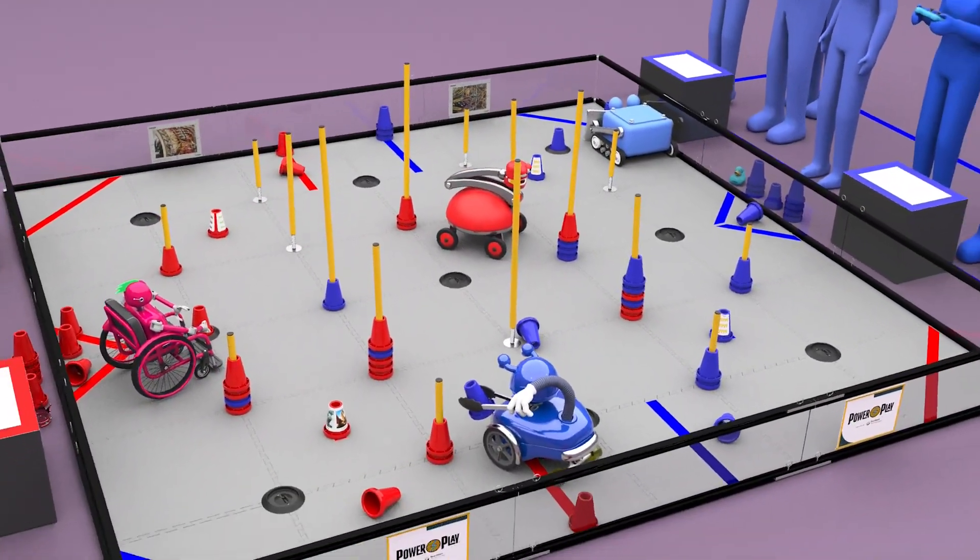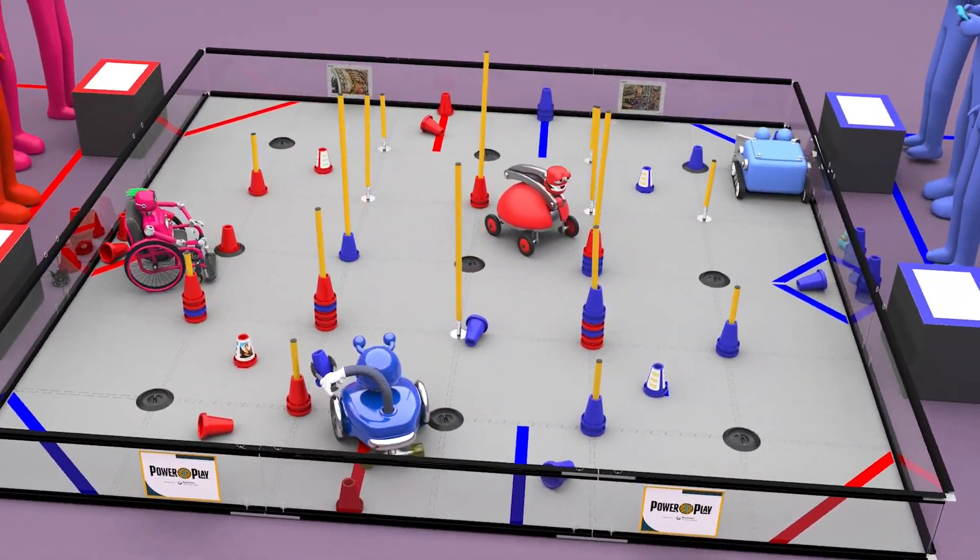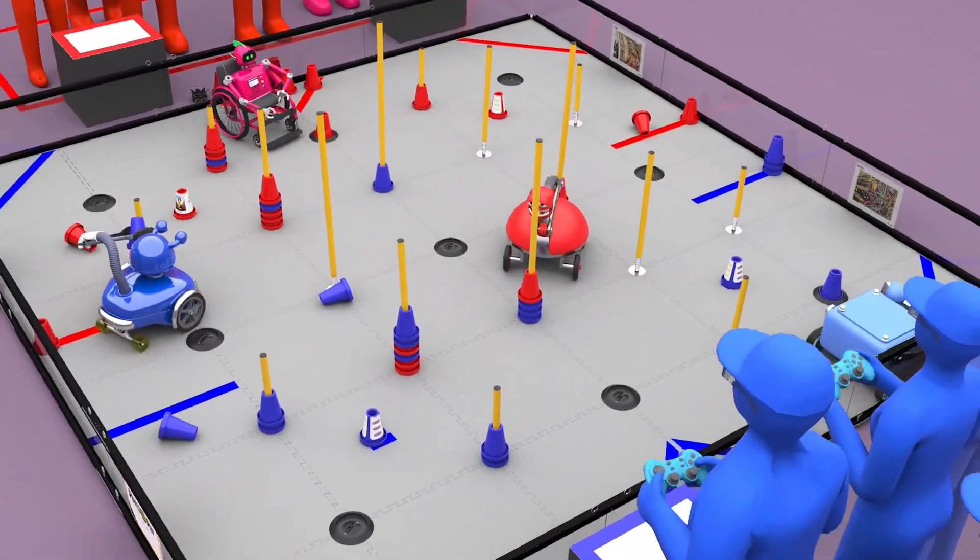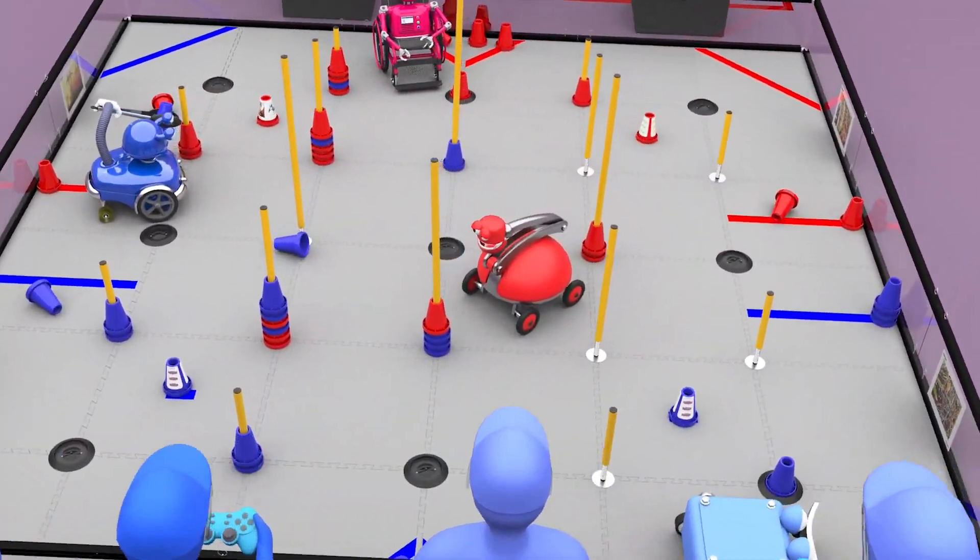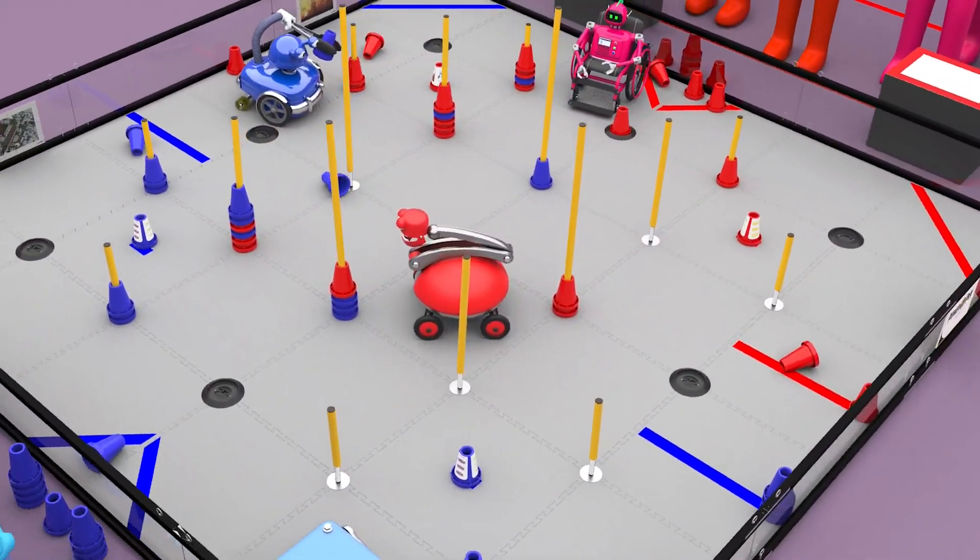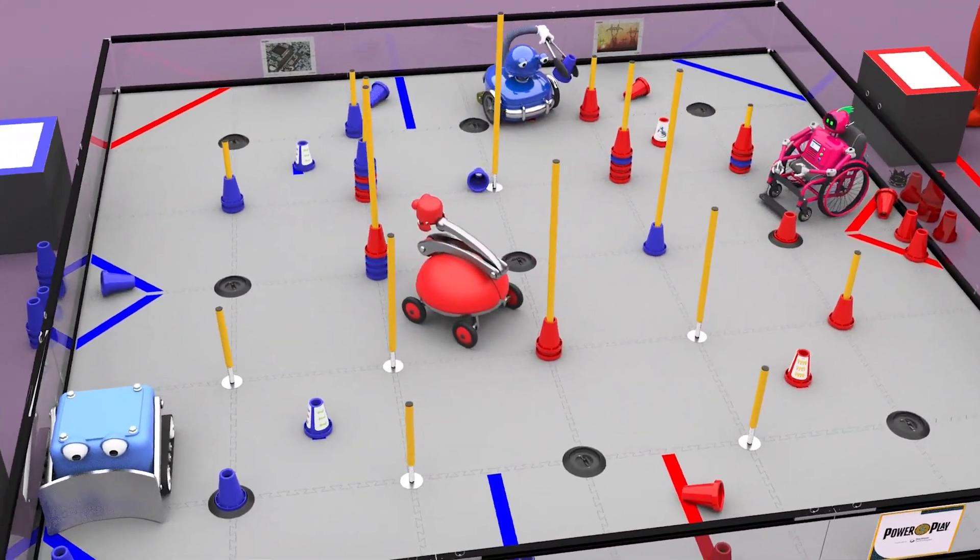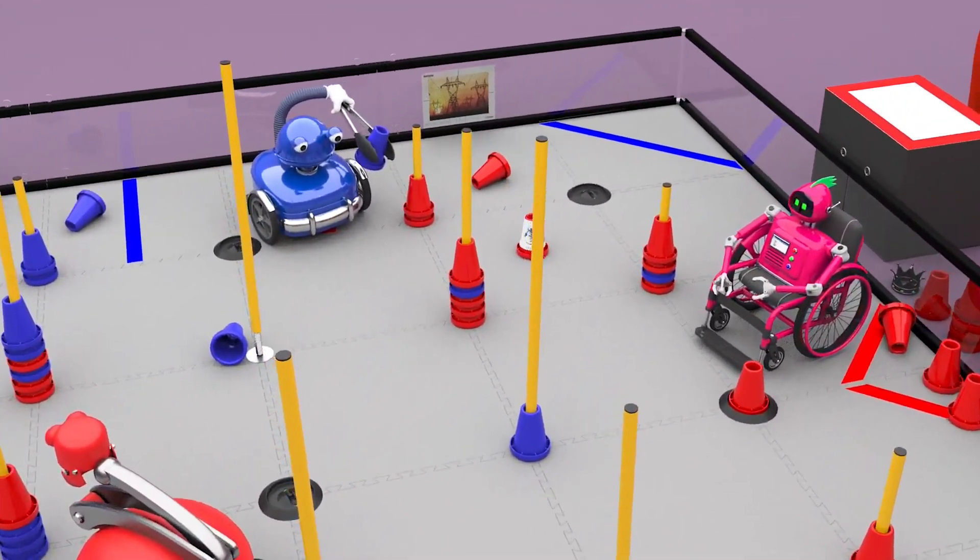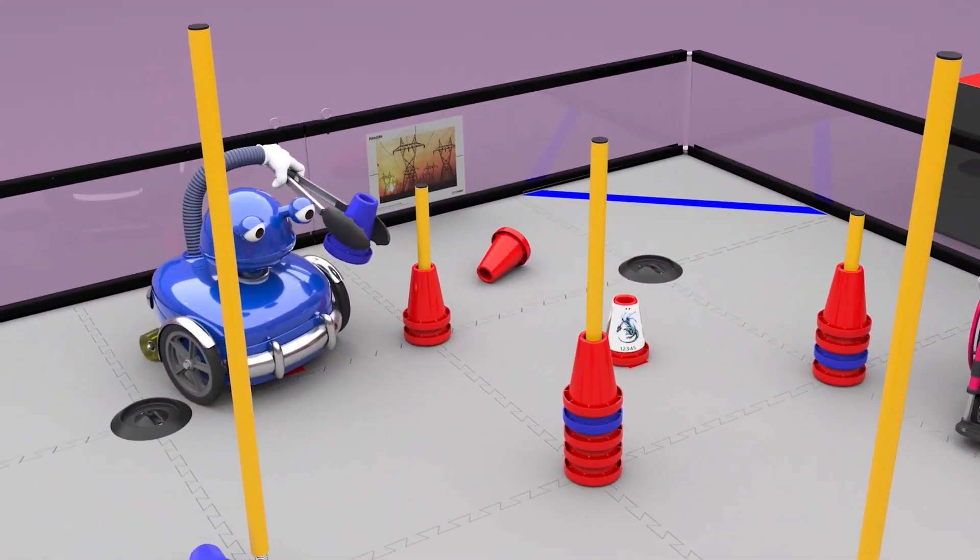The last 30 seconds of the driver-controlled period is the end game. Robots may continue scoring cones, but there are also ways to earn bonus points. Alliances earn points for owning a junction, which can be accomplished in two ways.